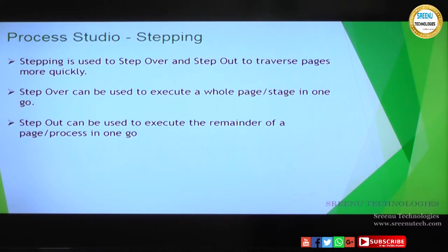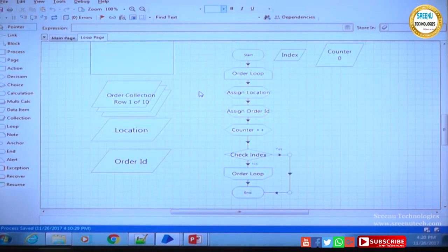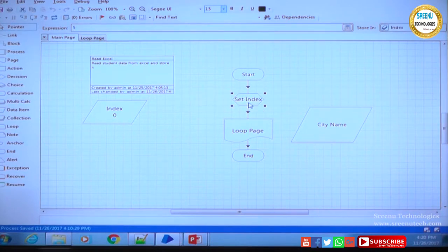Let's go back to the tool and see how this stepping debugging skill is useful for us. So here we are in the main page — this is the calling page or calling process, and loop page is our sub page or sub process. Start is a stage, set index is a stage, loop page is a stage, end is a stage.